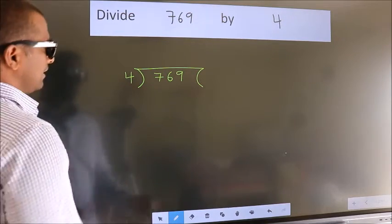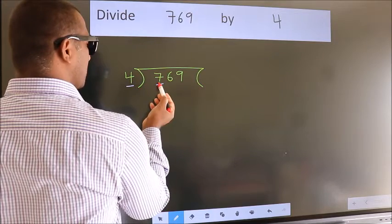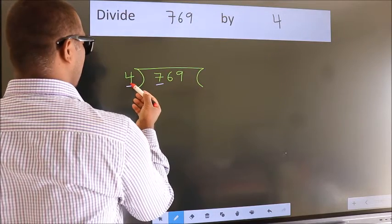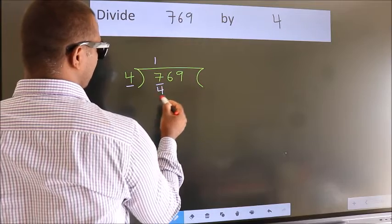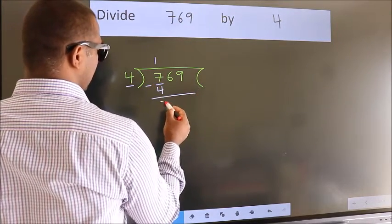Next, here we have 7, here 4. A number close to 7 in the 4 table is 4 ones, which is 4. Now we should subtract. We get 3.